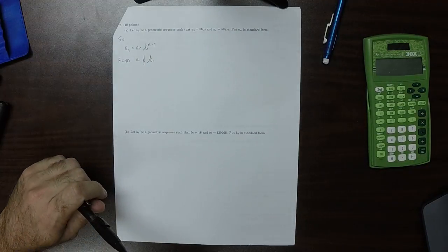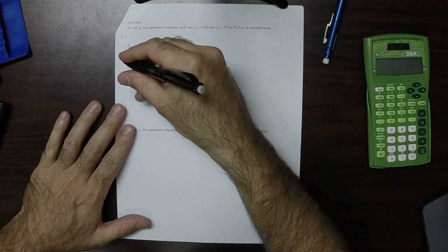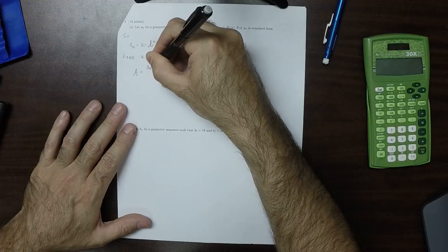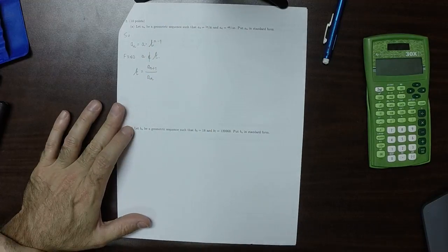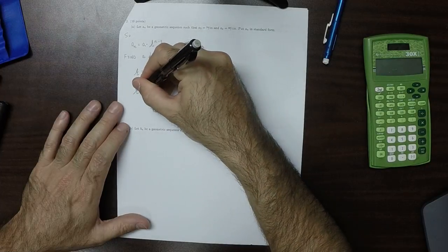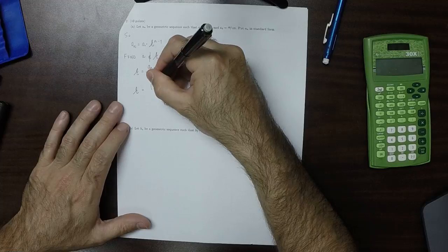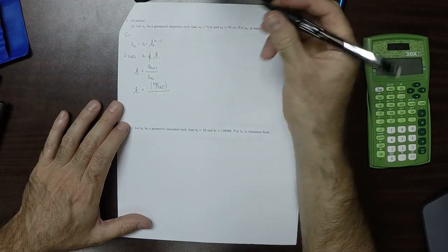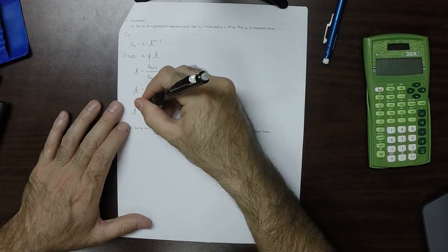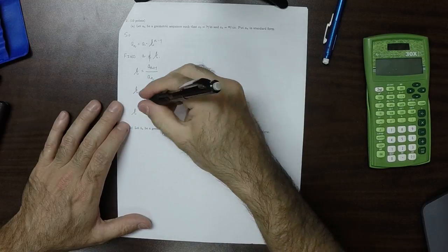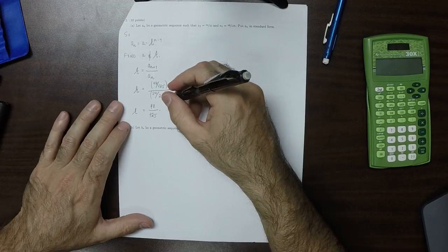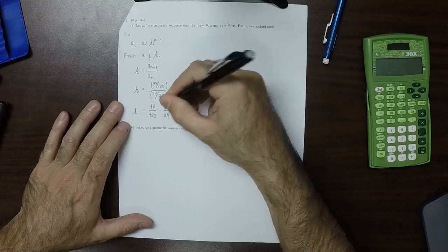Given the data that we know, r should be the ratio of any two consecutive terms. Since we're given consecutive terms in the geometric sequence, we can just plug in. So r will be 48 over 125 divided by 24 over 25. Because division by a fraction is the same as multiplication by its reciprocal, this will be 48 over 125 multiplied by 25 over 24.